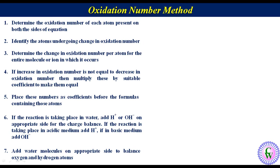Now we will do the exercise. Let's take the example of the reaction of permanganate ion with bromide ion under basic conditions to produce manganese dioxide and bromate ion. Label this unbalanced equation as equation number 1. Now let's go step by step for balancing this equation using the oxidation number method.